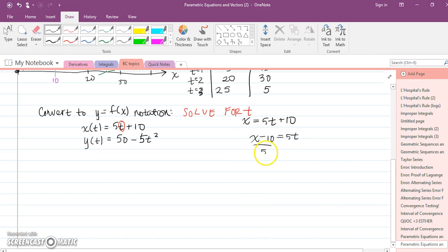And then what we're going to do is plug it in to the other equation. And then it'll just be y equals f of x. So what I'm going to do is take this, plug it right into there. So then I have y equals 50 minus 5 times x minus 10 over 5 squared.